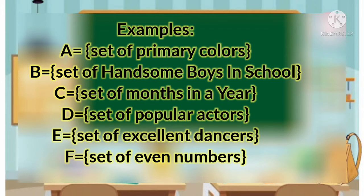Set D, a set of popular actors, is not a well-defined set because of the word 'popular' — maybe for me he is popular, but for you he is not. Set E, a set of excellent dancers, is also not a well-defined set because of the word 'excellent' — maybe for you he is an excellent dancer, but for me he is not. Set F, a set of even numbers — we have 2, 4, 6, and 8 — is a well-defined set.